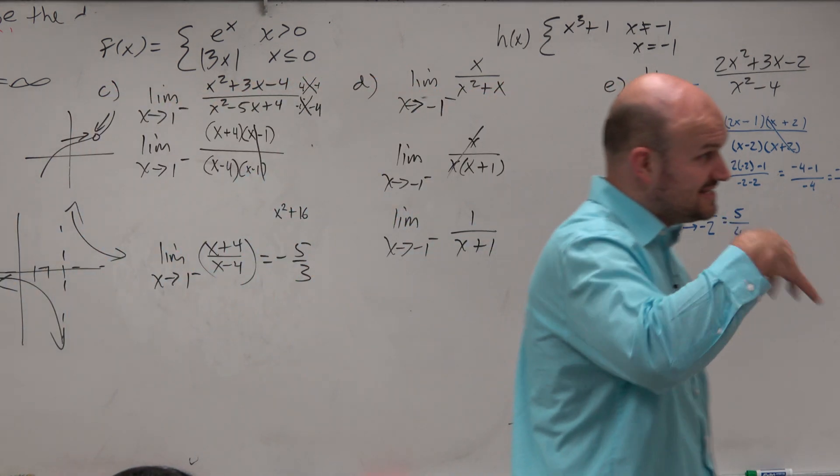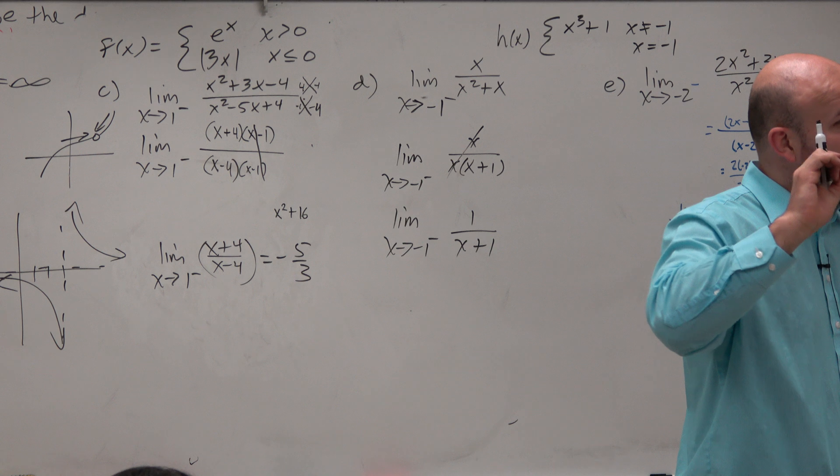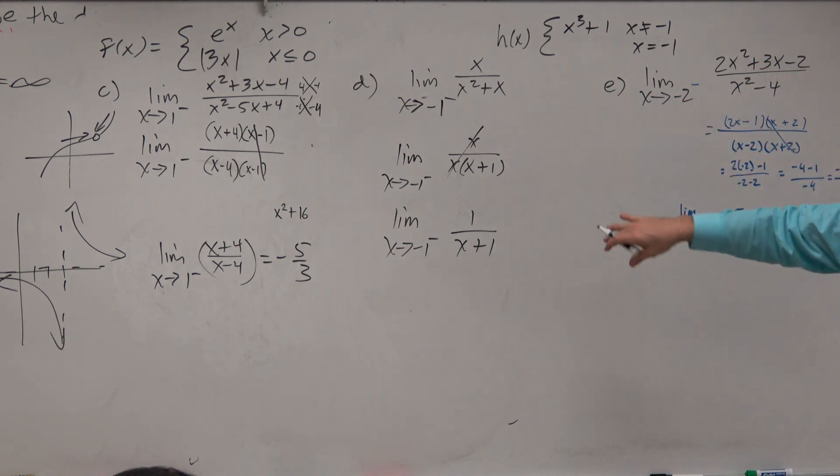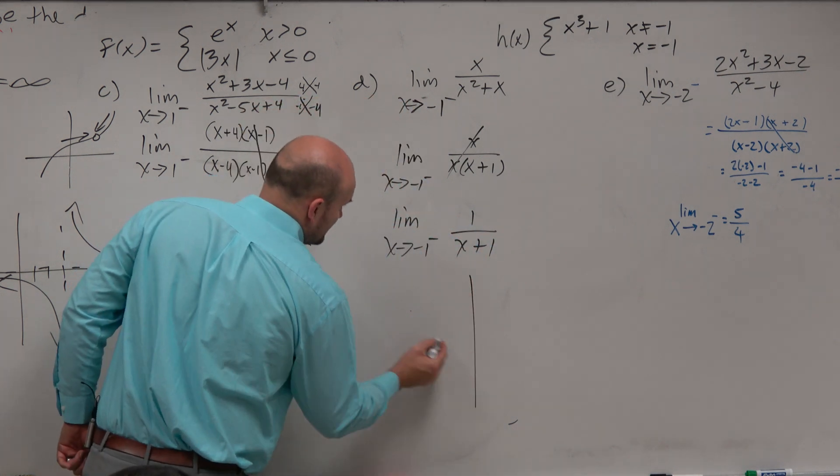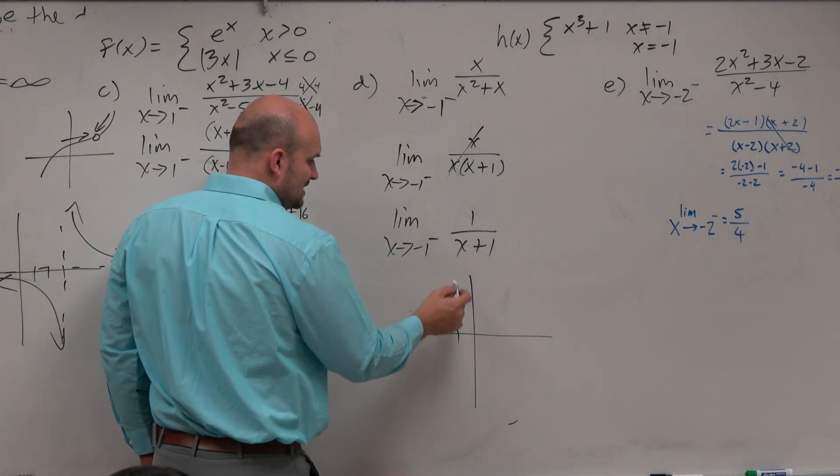Now, again, we still can't plug in a negative 1. However, we do recognize something. Do we recognize what this graph looks like? This is the reciprocal function that's being shifted one unit to the left.